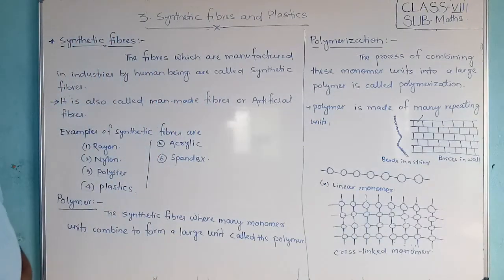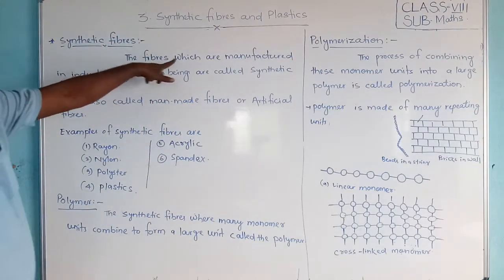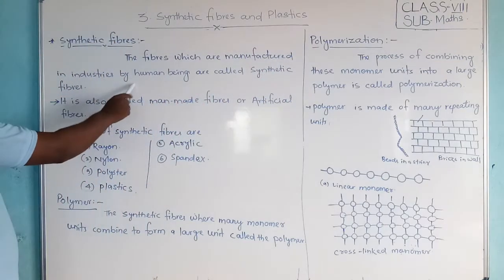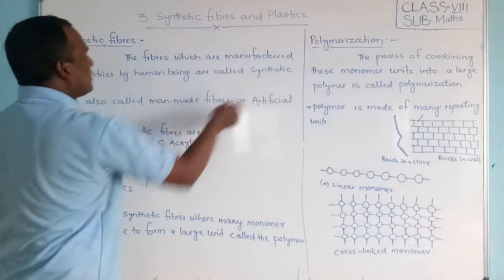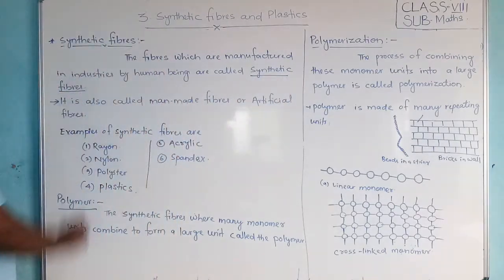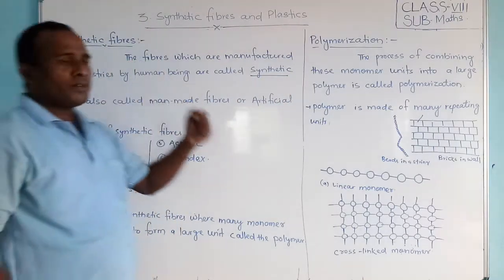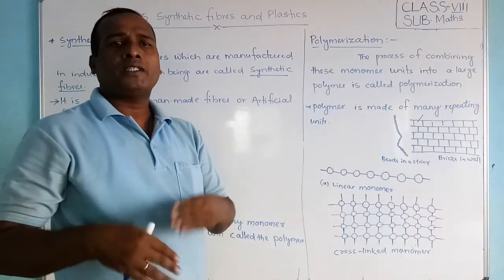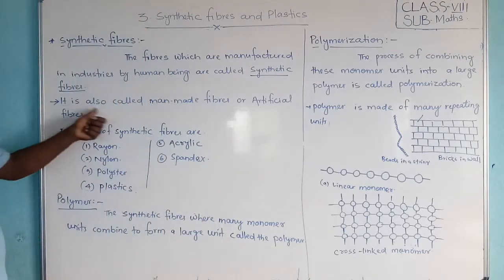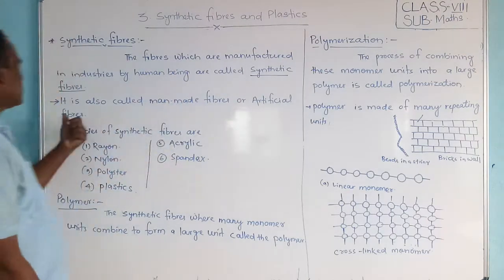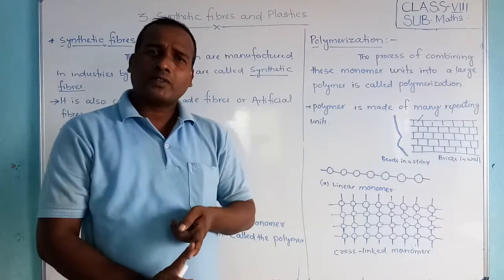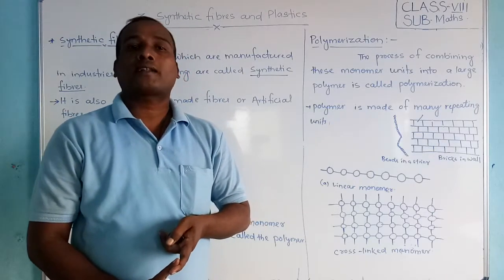Let us write down: the fibers which are manufactured in industries by human means are called synthetic fibers. That means the fibers we are making by ourselves, by chemical means, by industry. It is also called man-made fibers or artificial fibers.